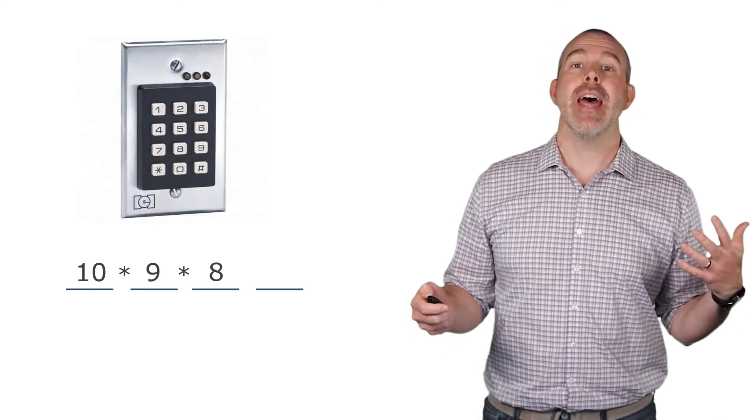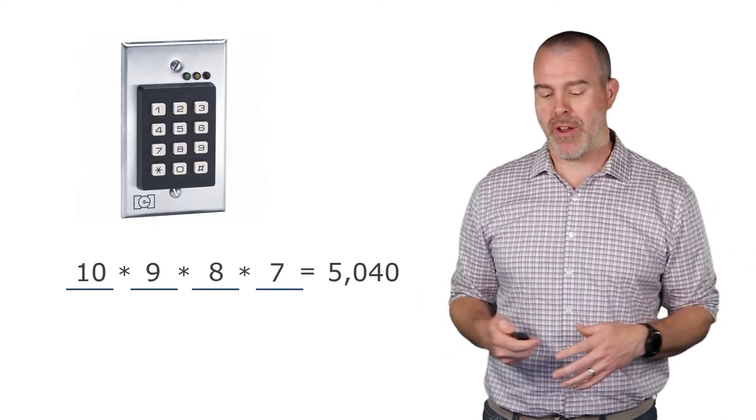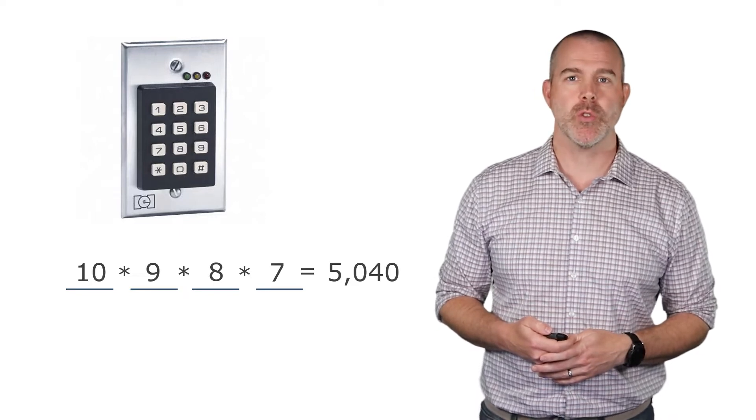What about like a passcode for a door? We say it's supposed to be four digits, and we can't have any repeats. So there's 10 choices for the first one, then nine, then eight, then seven. Multiply those together. There's 5,040 possible codes.